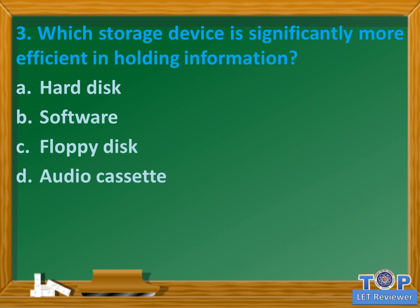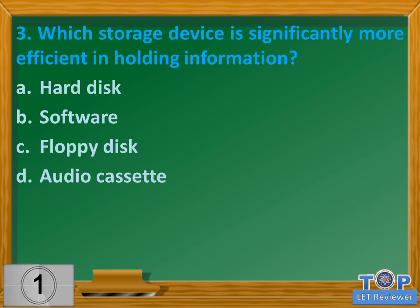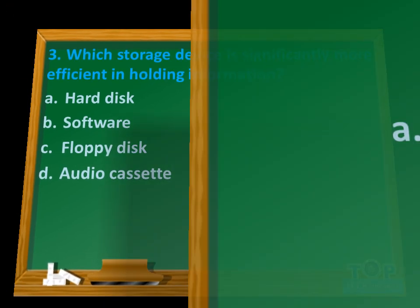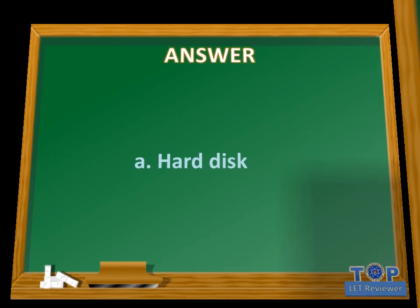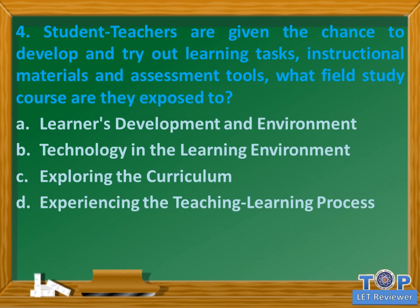Question number three: Which storage device is significantly more efficient in holding information? A. Hard disk. B. Software. C. Floppy disk. D. Audio cassette. Answer: A. Hard disk.